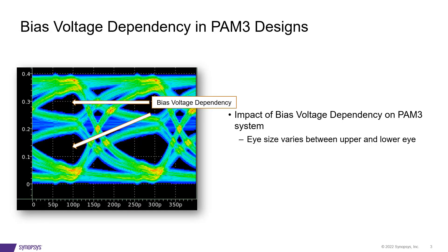We will look at the correlation of results run in edge and transient modes with PAM3 as an example, while accounting for the impact of bias dependency. You will see that STAT-I in PrimeSim HSPICE speeds up simulation, allowing designers to simulate millions of input bits in a very short time.